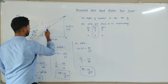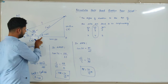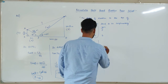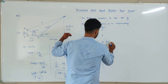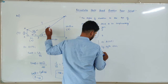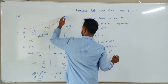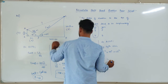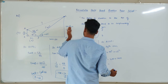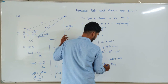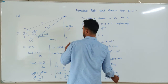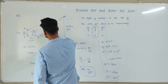Now I know AP is 20 by root 3 meters. Next, to find PC, I come to triangle PCD. I know PD and CD — I can use cos 60 or Pythagoras. This time I will go with Pythagoras theorem. By Pythagoras: PC squared equals PD squared plus CD squared. PD squared is 20 squared equals 400, and CD squared is 20 root 3 whole squared equals 1200. So PC squared equals 400 plus 1200 equals 1600. Therefore PC equals square root of 1600 equals 40 meters.